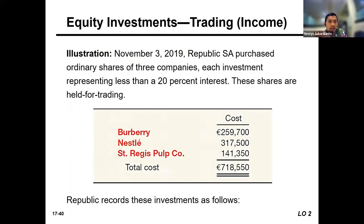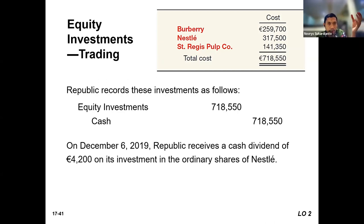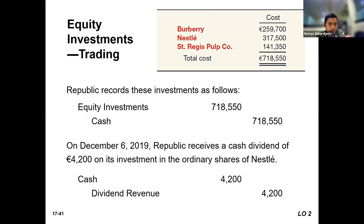Let's see this example. Suppose the company has three shares and each investment represents less than 20%, and the total cost of the portfolio is 700,000. When the company buys the share, the company records investment on debit and credits cash, because they spend cash to purchase the investment. Suppose on November 6, investors receive a cash dividend of 4,200 — to record this, the investor simply debits cash and credits dividend income. Nothing difficult up to this point.